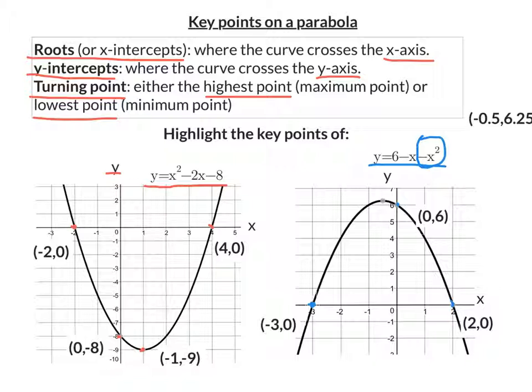And the last point is its turning point. Now its turning point here is its highest point. So that makes it a maximum point. And its coordinates are negative 0.5, 6.25.